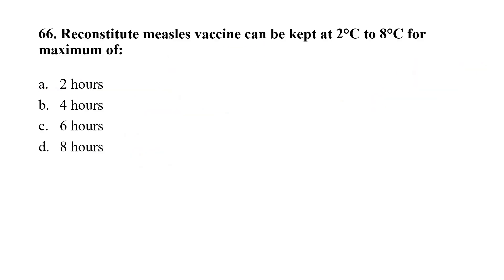Question number 66. Reconstituted measles vaccine can be kept at a temperature of 2°C to 8°C for a maximum of: Option A, 2 hours; Option B, 4 hours; Option C, 6 hours; Option D, 8 hours. The correct option is B, up to 4 hours.